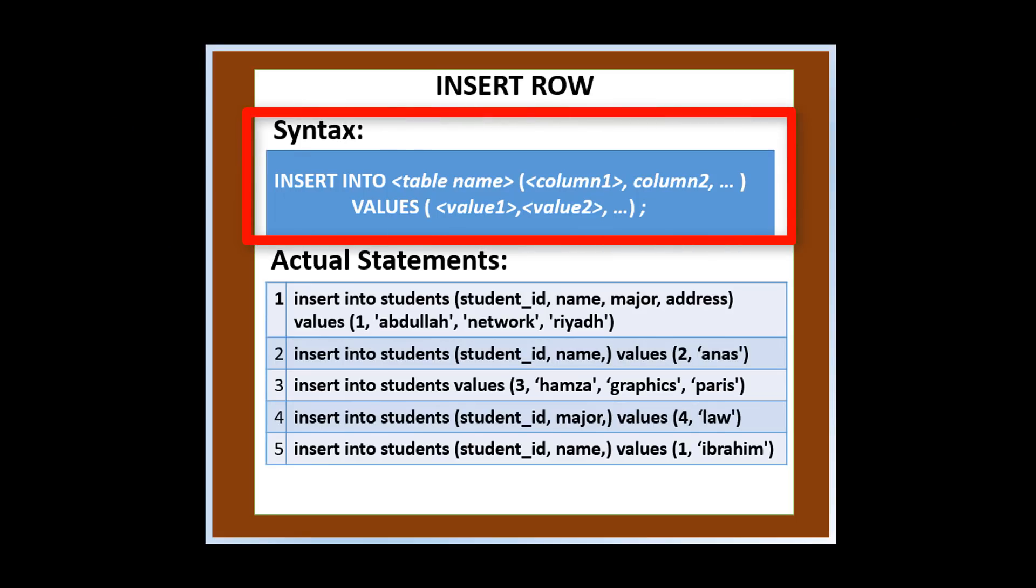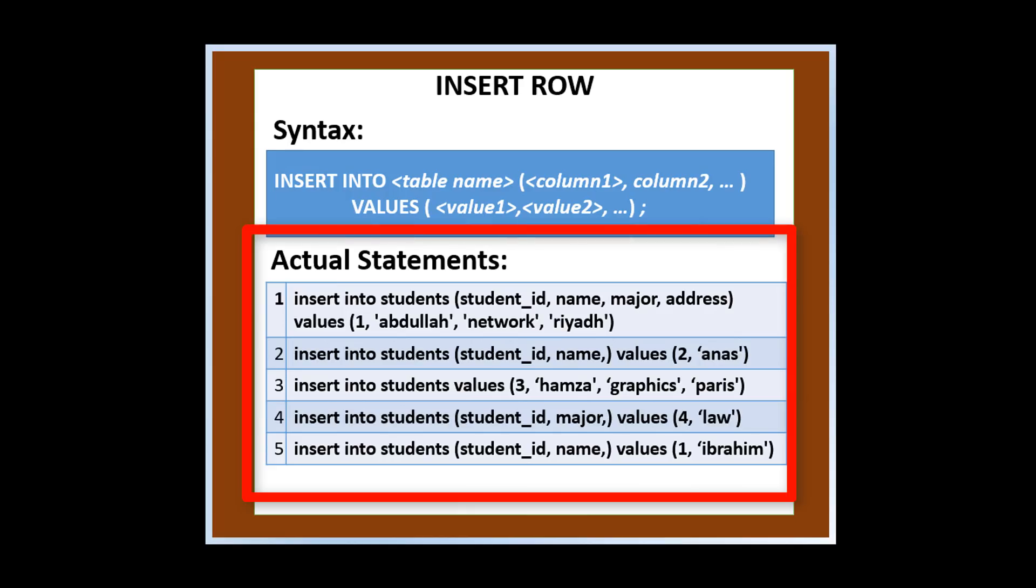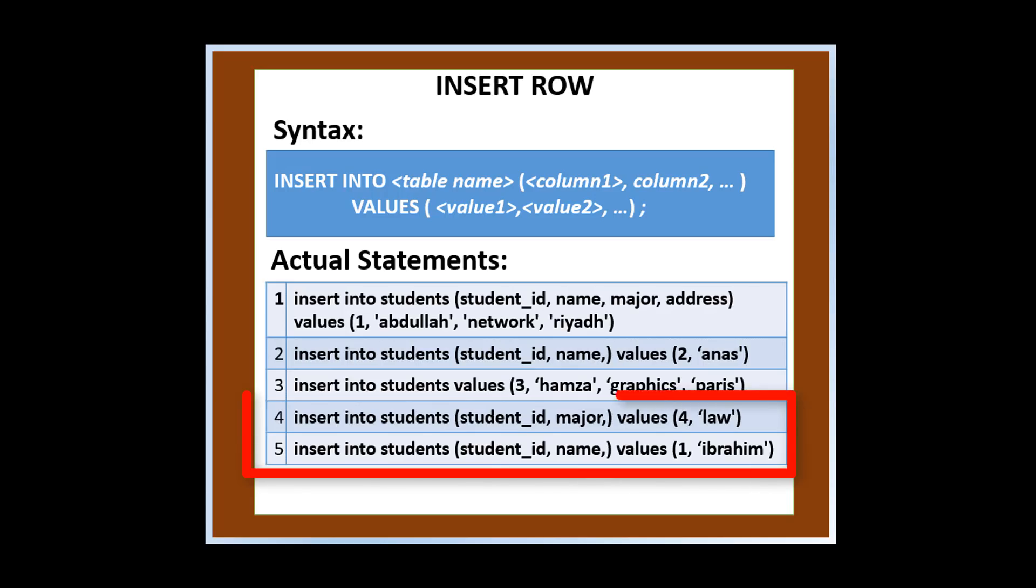Here is the syntax for inserting a single row. We have five statements to run in a text, but some of them have errors. Pause this video and try to look at these errors. What numbers have errors? If you said four and five, then you got them correctly.